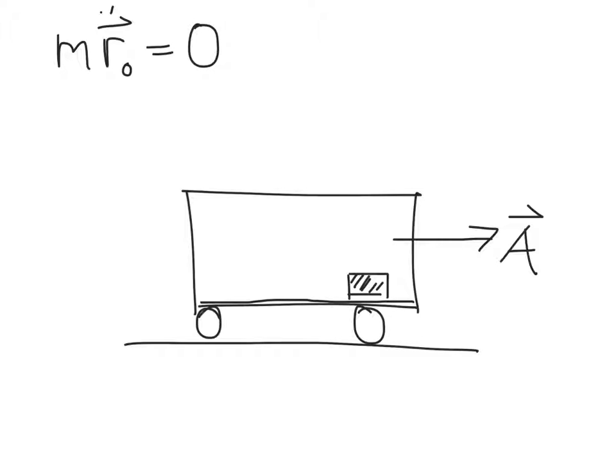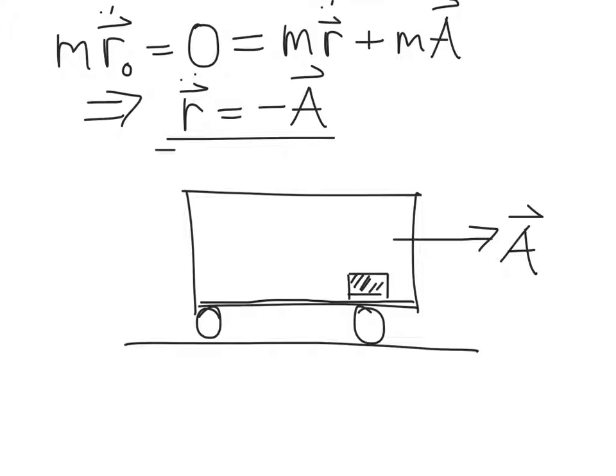However, for a person inside the train car, what's going to happen? Well, the puck is suddenly going to appear to accelerate backwards in the opposite direction as the train car is accelerating as measured with respect to the surface of the earth. In other words, the acceleration of the puck is going to be in the opposite direction to the acceleration of the train car as seen by the person standing on the surface of the earth.